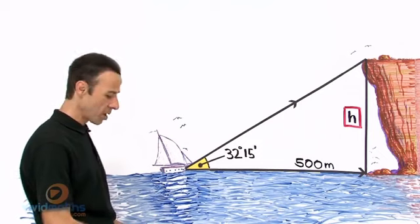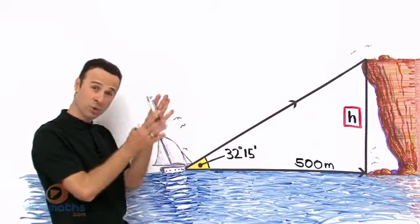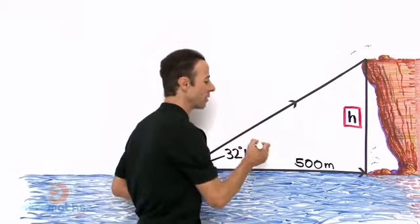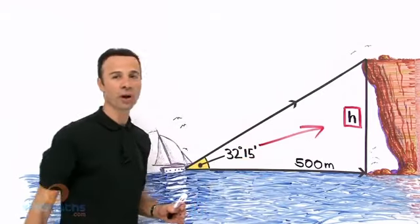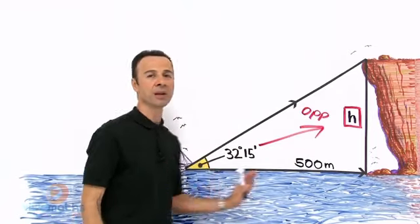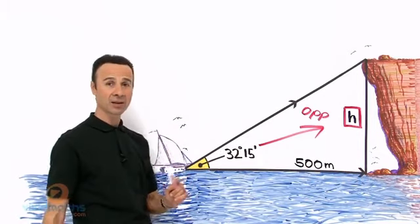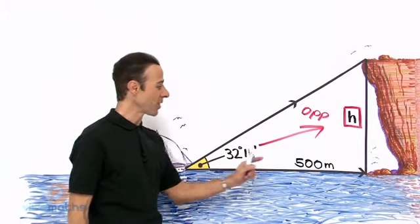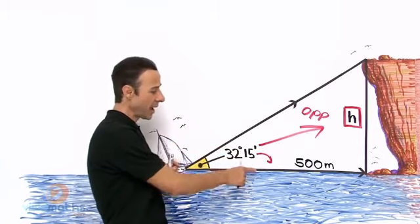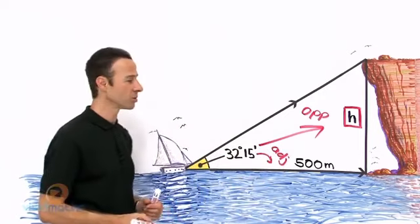Let's decide where that angle is. Jackie is in the boat with the protractor at 32 degrees 15 minutes. She looks directly in front of her—that's the opposite. The other measurement is 500 meters, how far out she is from the base of the cliff to the boat, and that's to the right of the angle.